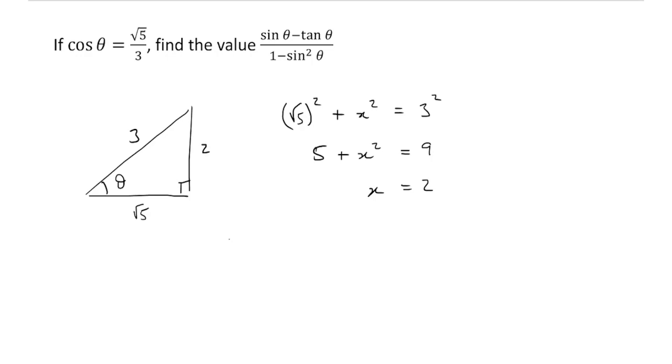And if that's the case, then calculating sine theta minus tan theta over 1 minus sine squared is going to be fairly straightforward because we can find out what sine and tan are. So what's sine theta? It's going to be opposite 2 over the hypotenuse 3. We've got 2 thirds.